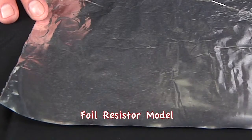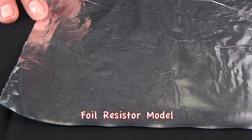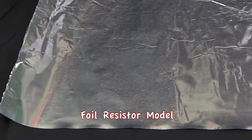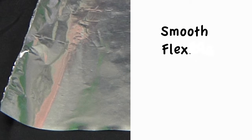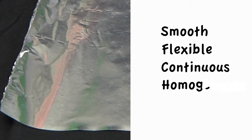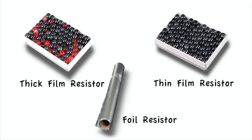Foil — just like it says. This is exactly what it looks like before making a resistor out of it: smooth, flexible, continuous, homogeneous, elastic. Now we have the basic structure of the three technologies envisioned in our minds.